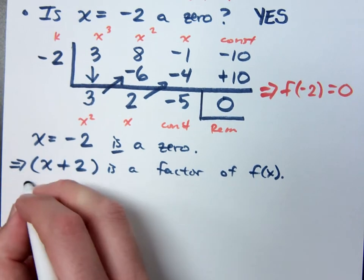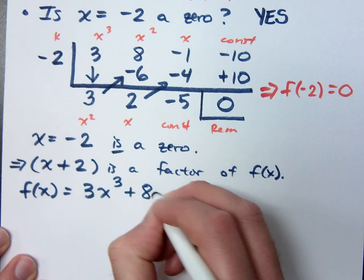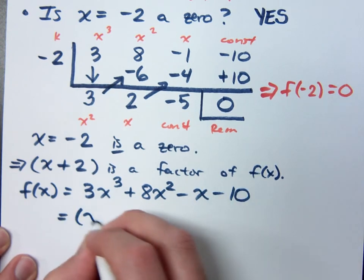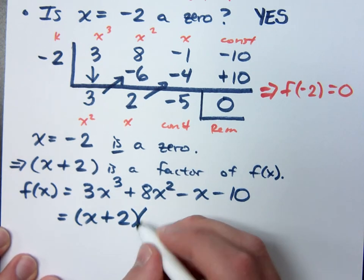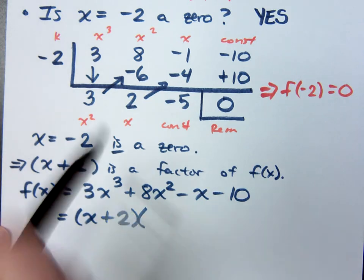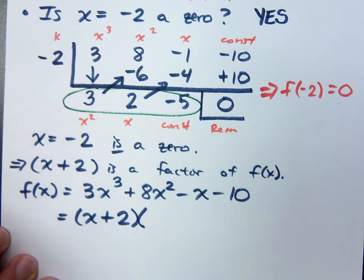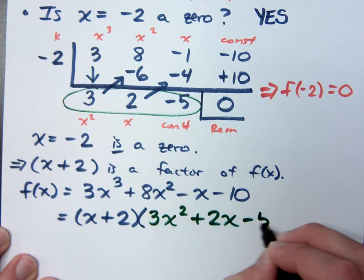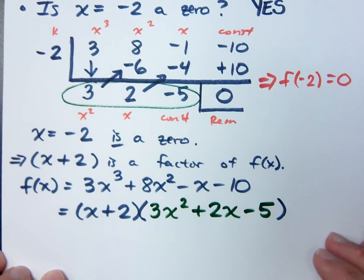So that means my original function 3x³ + 8x² - x - 10 will factor... x + 2 is one of the factors, right? What was the other factor that we found from doing the synthetic division? 3x² + 2x - 5. Use those coefficients right there. So that's 3x² + 2x - 5. Do you all agree with that?